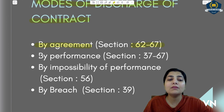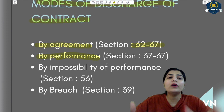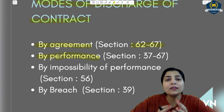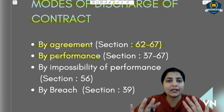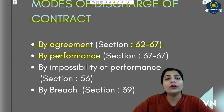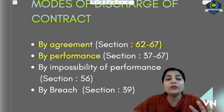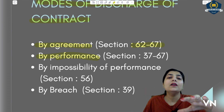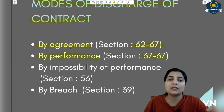The second way is by performance. Performance means whatever is written in the contract, whatever you were asked to do — just do it, perform that task, and the contract is finished. For example, if a party has booked a marriage hall with another party to hold a wedding — once the wedding happens, the contract is over. Performance of the contract also discharges it. This is given in sections 32 and 37 to 67.